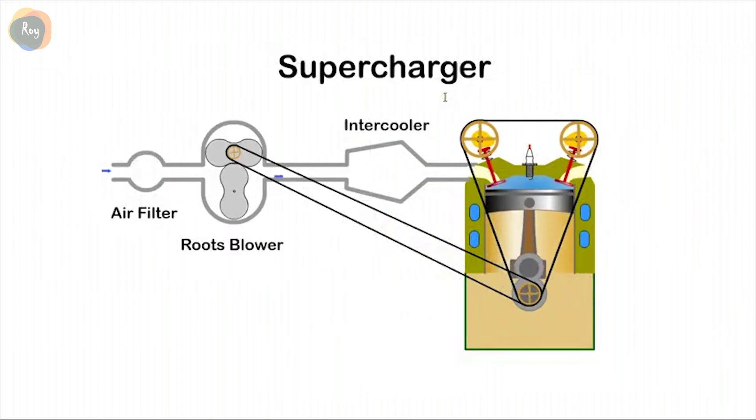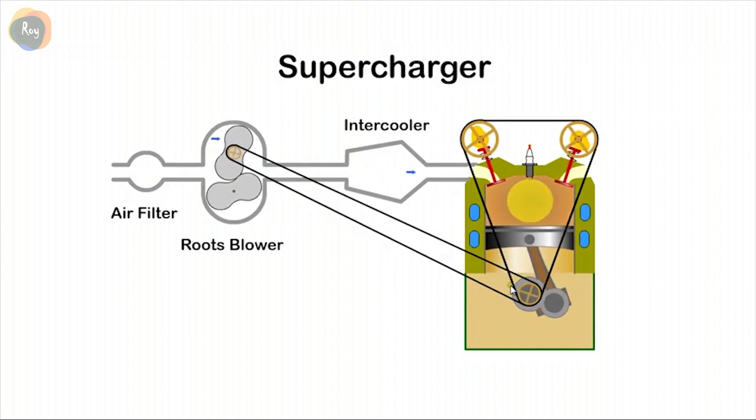On the intake stroke we want to get as much air into the cylinder as possible. Air intake can be improved by pressurizing the incoming air with a pump driven by the engine. The pump is called a supercharger and in this case a roots blower is used. This system improves air intake, however the belt driven blower takes power from the engine.